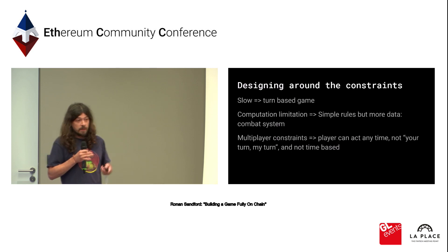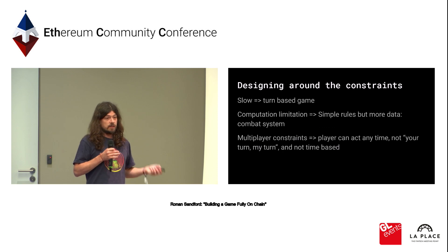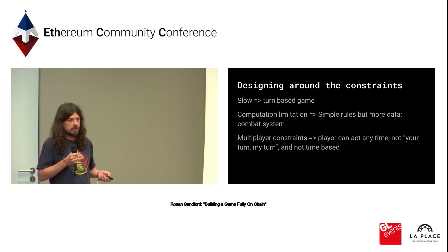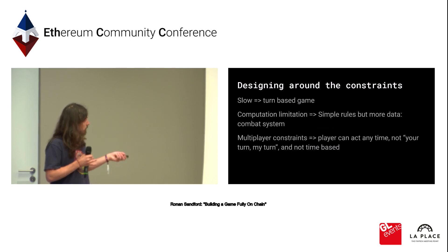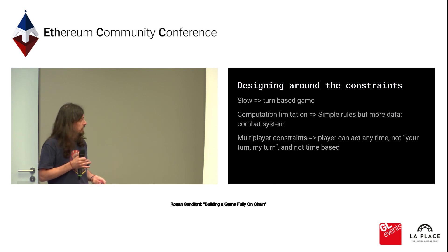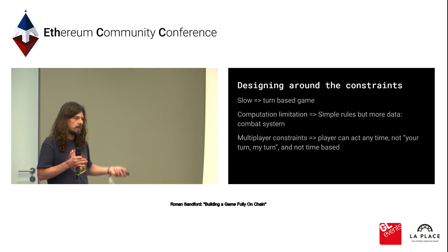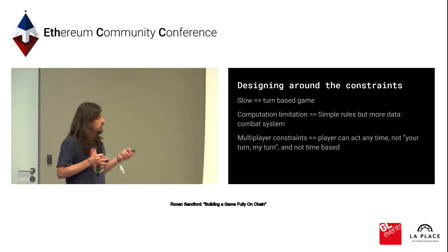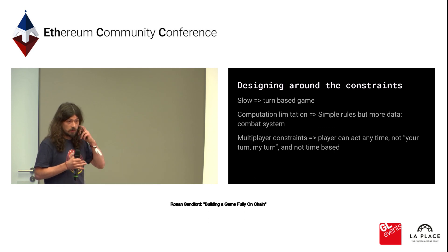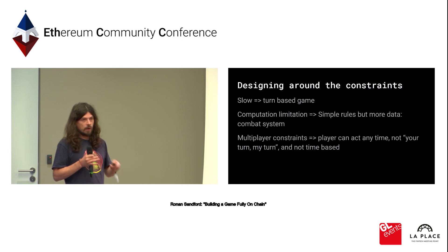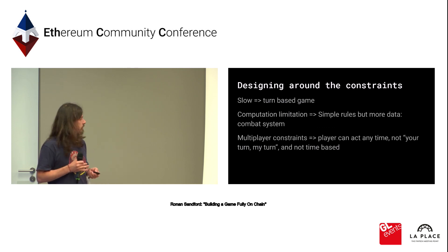Making a fully on-chain game is a constraint, so we designed the game around those constraints. First, it's slow — so we made a turn-based game. There is computation limitation, so we designed simple rules. But sometimes you can replace complex rules with simple rules plus more data, which is what we do with our combat system — it has depth while the mechanism remains simple. Multiplayer also has constraints: we couldn't do wait-your-turn mechanics or time-based actions because transaction time is unreliable.